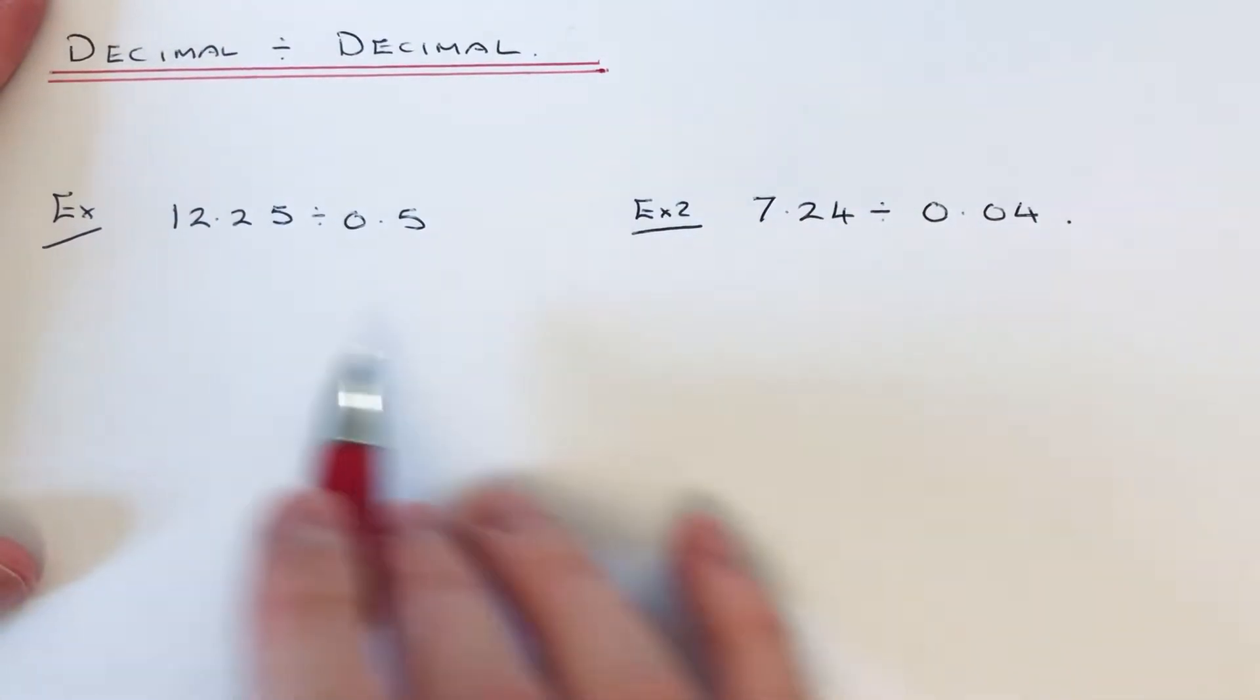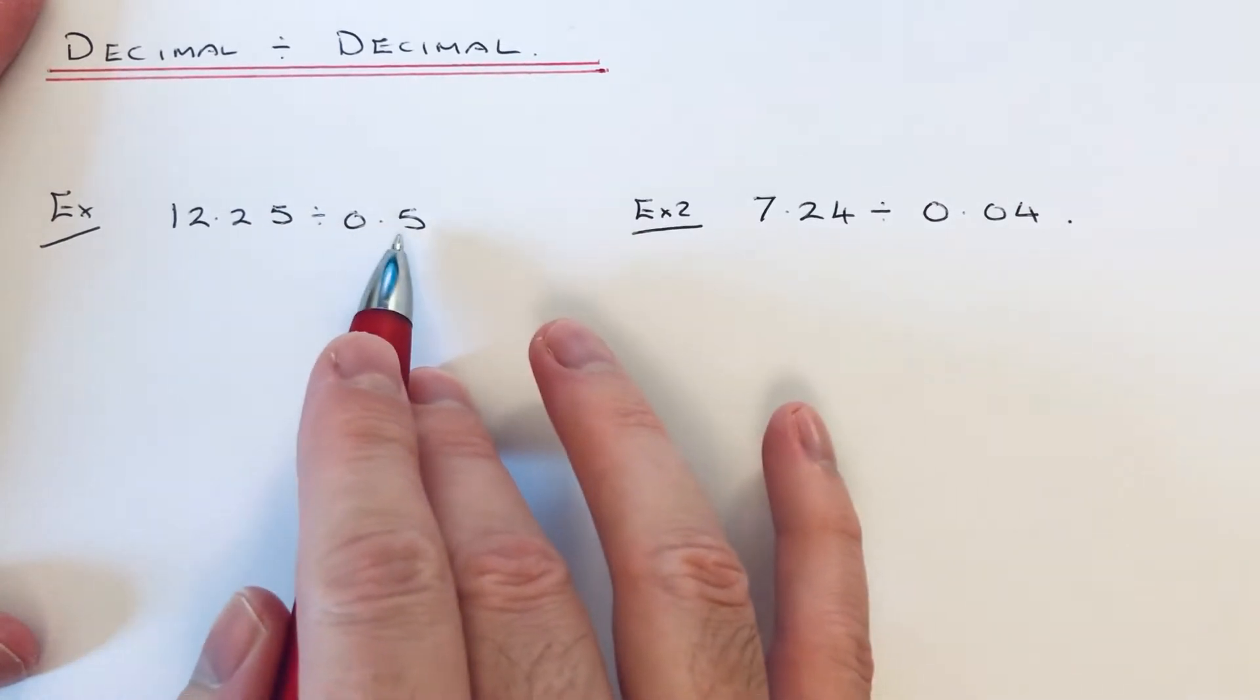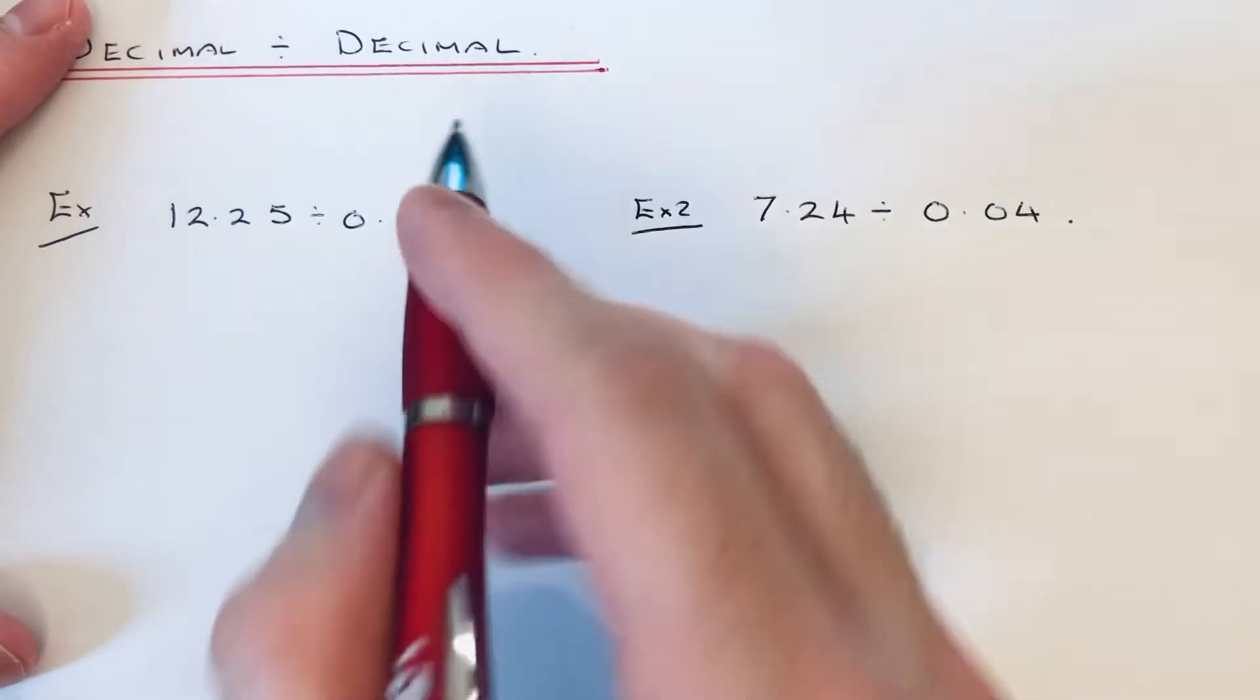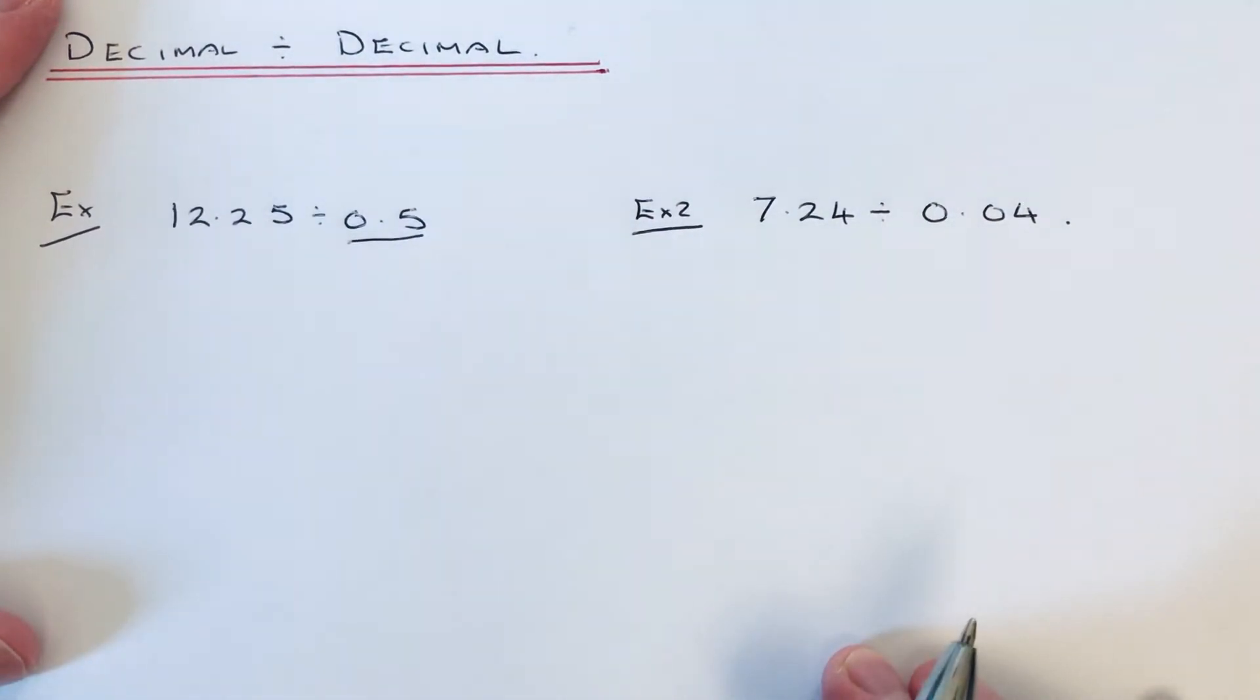So let's have a look at example 1. We've got to divide 12.25 by 0.5. What we need to do is get rid of that decimal number that we're dividing by.